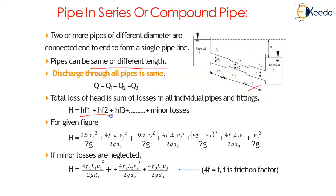These three contribute to major loss, plus minor losses. If there are more pipes, we need to include head losses from those pipes as well. HF1 is the head loss due to friction in pipe 1, HF2 is head loss due to friction in pipe 2, and HF3 is head loss due to friction in pipe 3.